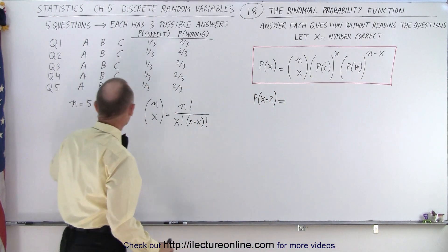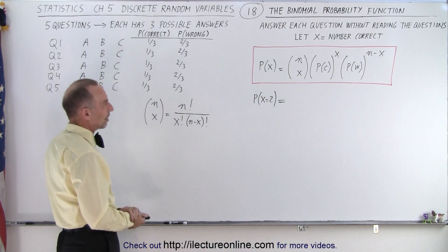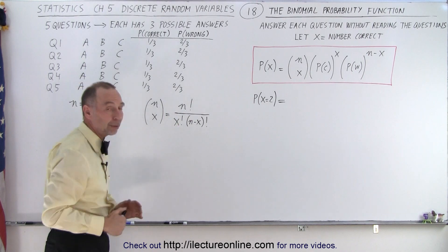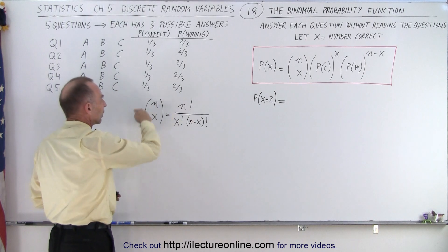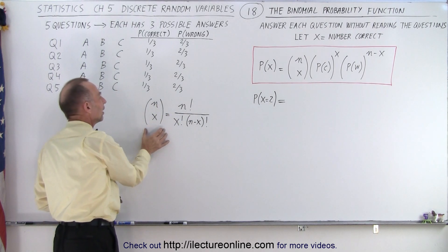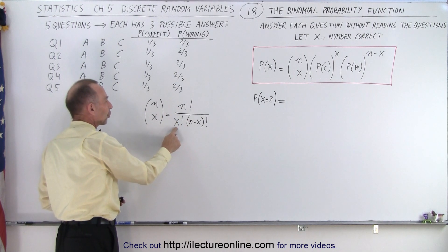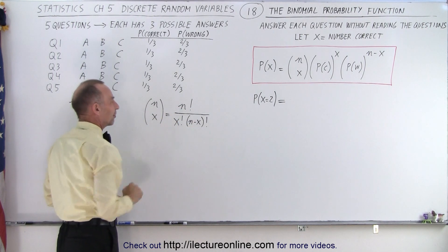Now remember that n, since there's five questions, n equals five. And we're going to show you how to apply that, for example, to get the probability that we'll get two correct. But first, we need to understand what this is. This means that we take n factorial divided by x factorial and divided by n minus x factorial.